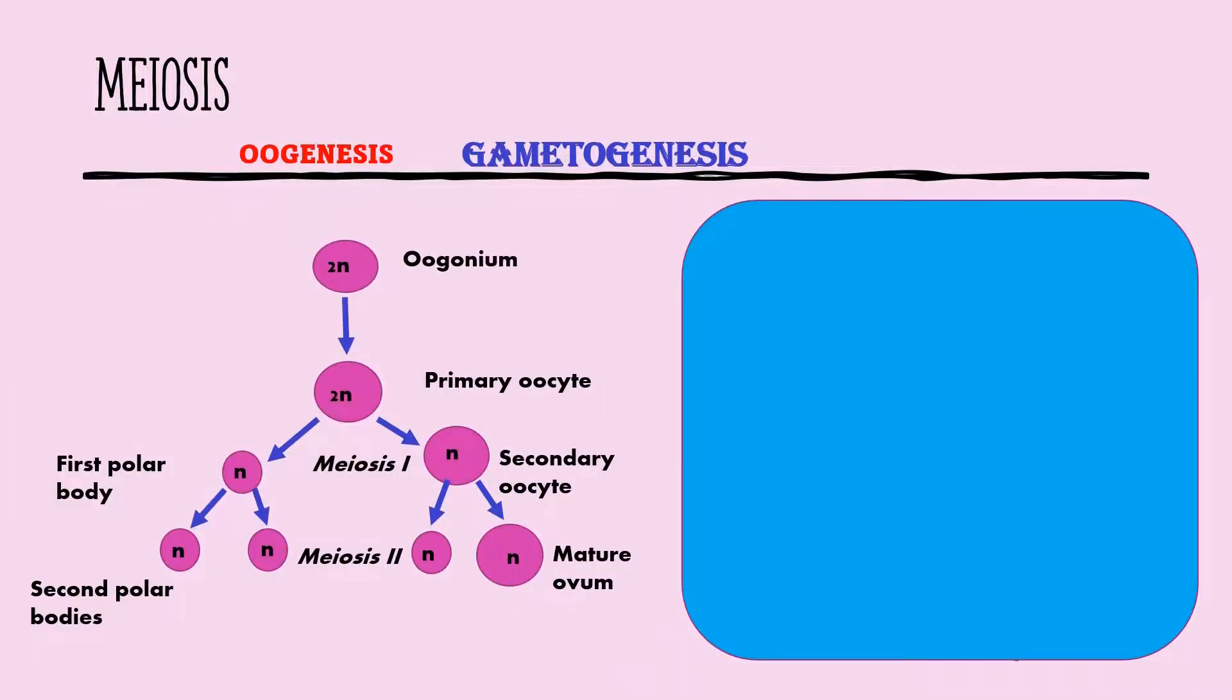Oogonium having a diploid chromosome grows into a primary oocyte, and there are around 400,000 of them in the ovary at birth. They remain dormant until just prior to ovulation. The primary oocyte undergoes meiosis I. The nucleus splits so that half of its chromosomes go to the first polar body, and the other half goes to the secondary oocyte. The first polar body and the secondary oocyte proceeds to meiosis II, giving rise to three second polar bodies with haploid chromosomes and one mature ovum with haploid chromosomes. The three polar bodies disintegrate, leaving only the mature ovum.